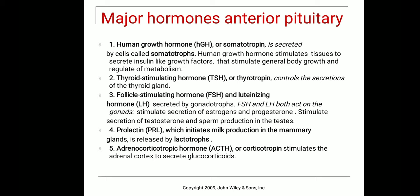Prolactin helps in the initiation or production of milk, converting blood components into milk, and is secreted from the anterior pituitary by a group of cells called lactotrophs. The adrenocorticotropic hormone (ACTH) or corticotropin is released from corticotrophs in the anterior pituitary and acts on the adrenal cortex to release mineralocorticoids, glucocorticoids, and sex hormones.